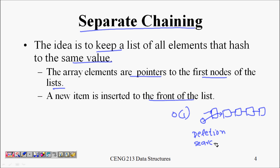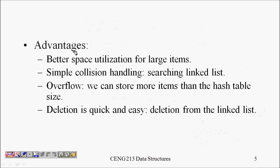For search, I can find h(x) and get the linked list head, but then I have to traverse the list — so it will not be O(1).